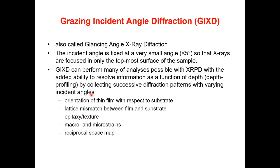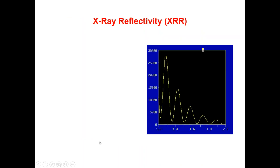With grazing incidence angle diffraction, we can find the orientation of a thin film with respect to the substrate. Similarly, we can obtain the lattice mismatch between the film and the substrate, get information about epitaxy and textures, and find information about macro and micro strains and reciprocal space maps.